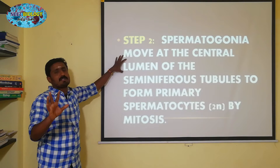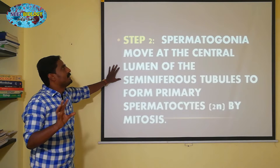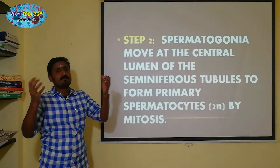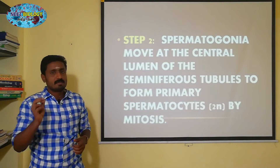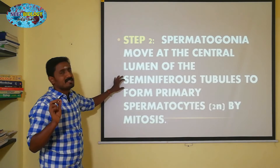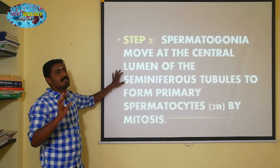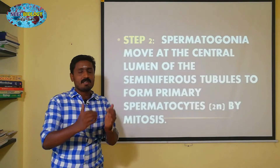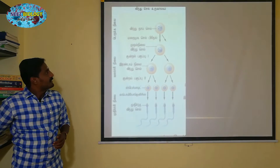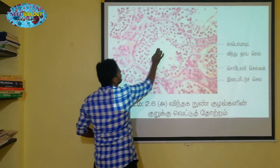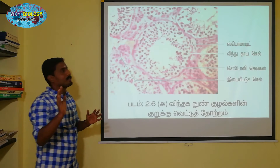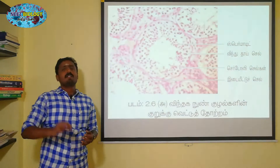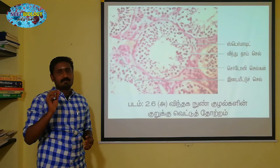Spermatogonia move toward the central lumen of the seminiferous tubules to form primary spermatocytes. The lumen is the central space of the tube. As the sperm mother cells move to this lumen, primary spermatocytes are produced. This is the first step in the process.